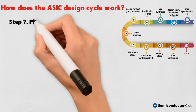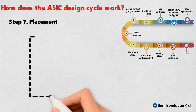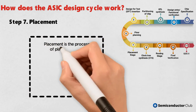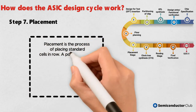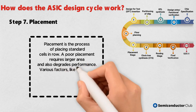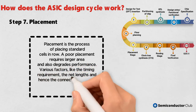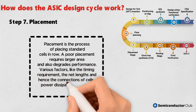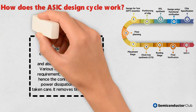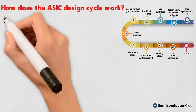Step 7: Placement. Placement is the process of placing standard cells in rows. A poor placement requires larger area and also degrades performance. Various factors like the timing requirement, net lengths and hence the connections of cells, and power dissipation should be taken care of. It removes timing violations.